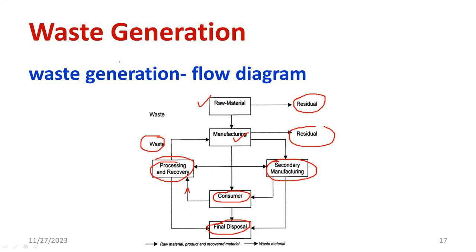The main conclusion from this block diagram is that at each and every stage, there is production of waste. There is waste generation at every segment of the waste management system. For every basic waste management system, if you observe each and every stage, there is a production of waste.